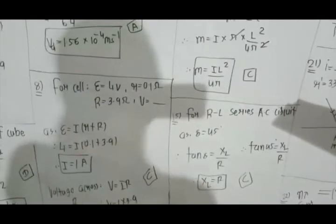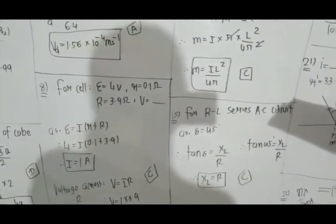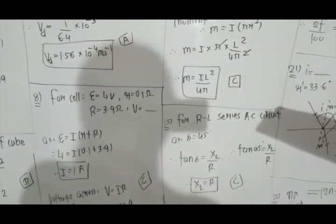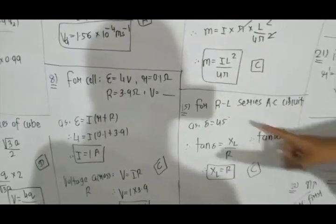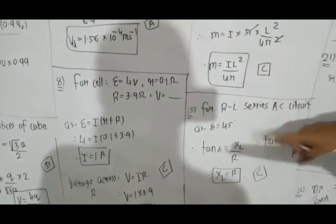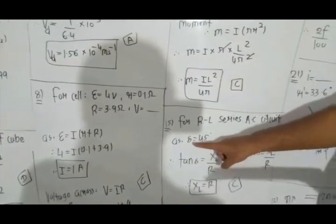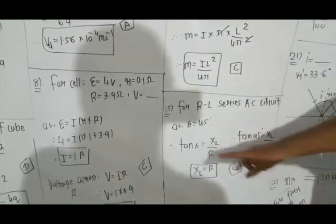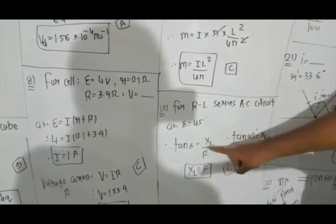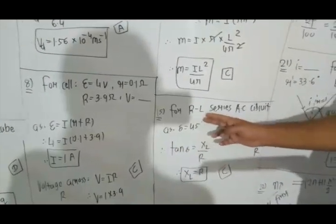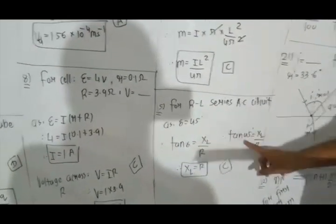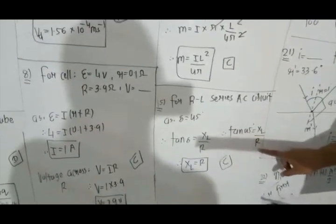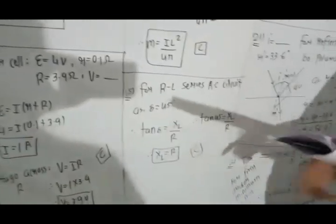Question number 15. In an AC circuit, resistance R and inductor L are connected in series. The phase angle between voltage and current is 45°. The formula is tan(δ) = XL/R. Since tan(45°) = 1, we get XL = R. Option C.